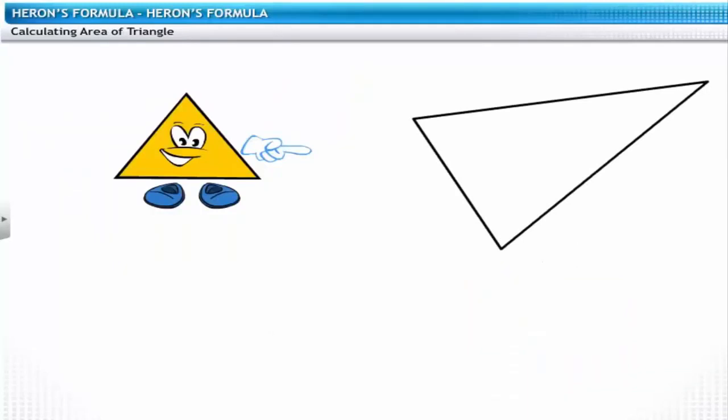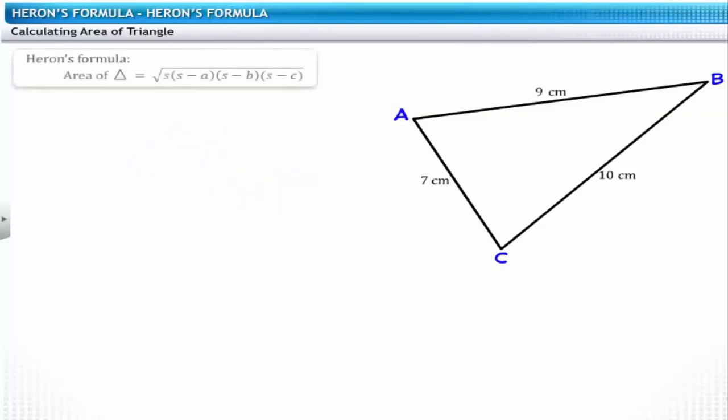Let's consider a triangle. The lengths of the sides are 10, 7, and 9 centimeters. We'll use Heron's formula to calculate its area. First, let's calculate the semi-perimeter, which is half of the perimeter. This is equal to 13 centimeters.